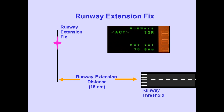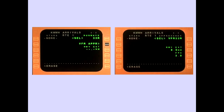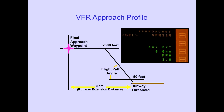Entering a distance on the runway extension line creates a waypoint on runway heading at the distance entered from the runway threshold. Pushing the VFR approach line select key displays the runway extension distance and flight path angle. Flight path angle may be changed by the flight crew. The VFR approach profile is a combination of a fixed runway extension distance and the selectable flight path angle, providing path generation for LNAV and/or VNAV guidance to the entered runway as an aid to the pilot during a VFR approach.